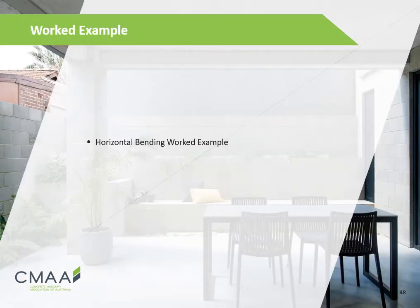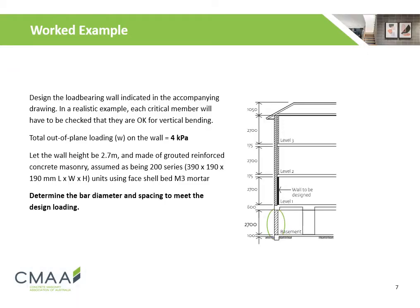We will now go through an example for designing a vertically reinforced concrete masonry wall. This example requires us to design a load-bearing wall with a total out-of-plane loading of 4 kPa. The wall is 2.7 m high, made of standard concrete masonry units, using face shell bedding of M3 mortar. We will determine the horizontal bending capacity of the wall and check whether it is greater than the design loading.